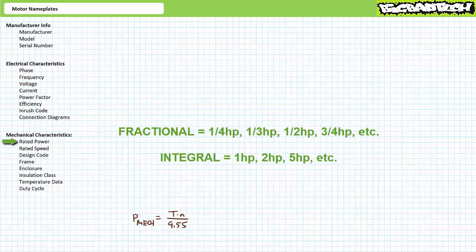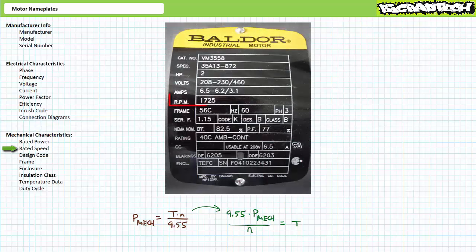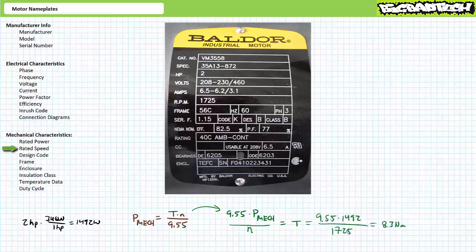Rated speed is the rotational speed of the shaft in RPM at full load conditions. Rated torque is not directly specified on a motor nameplate but can be back-calculated: torque equals mechanical power times 9.55 divided by rotational speed. For the previous two-horsepower motor at 1,725 RPM: two horsepower equals 1,492 watts, and substituting into the formula gives approximately 8.3 N·m of torque at the rated condition.